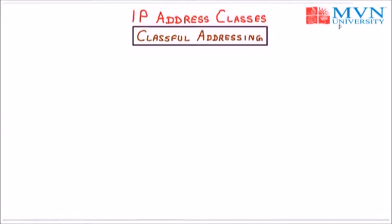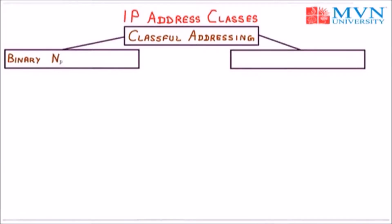In classful addressing, we divide IPv4 addresses into five types: classes A, B, C, D, and E. Now classful addressing is of two types. The first one is binary notation and the second one is dotted decimal notation. We will start with the classful addressing in binary notation.